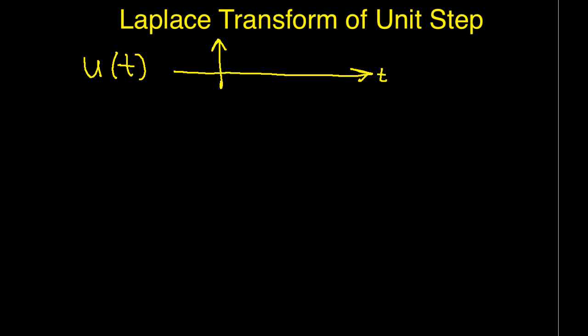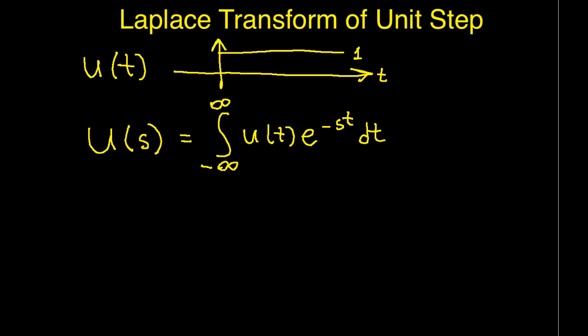The unit step function looks like this. It has a value of 1 for values of t greater than 0, and a value of 0 for values of t less than 0. I'll denote the Laplace transform of the unit step function as capital U of s. The integral definition of the Laplace transform is this integral. In this integral, I can replace the lower limit of integration by 0, because U(t) is 0 for values of t less than 0.